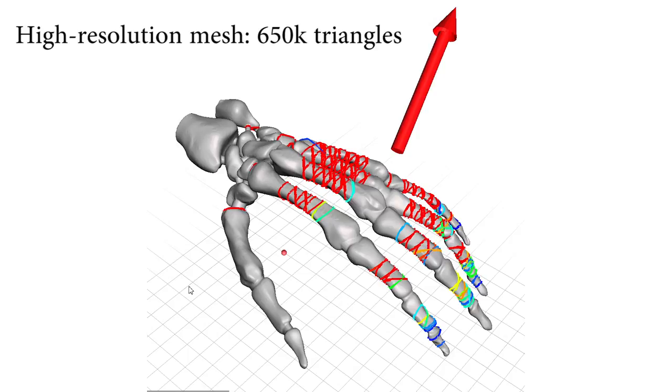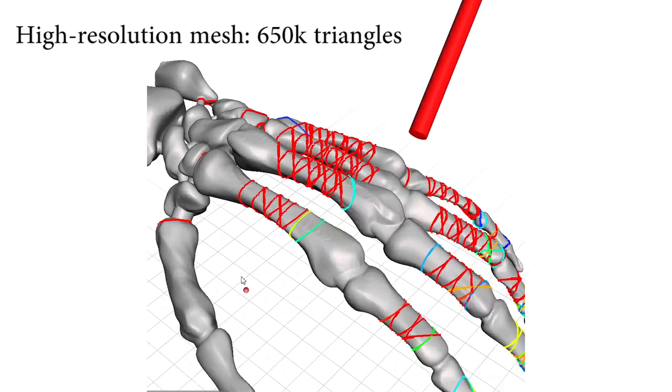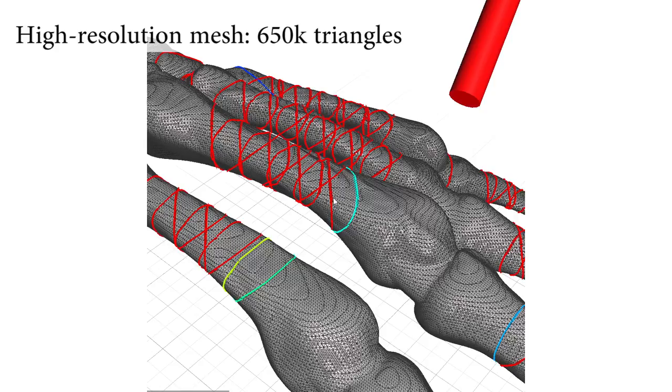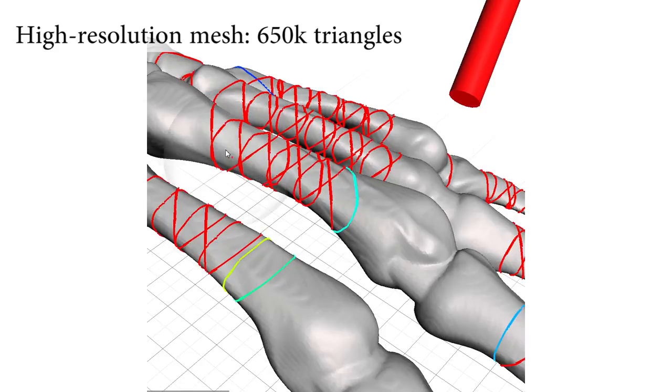This hand mesh has approximately 650,000 triangles. Even at this extreme resolution, our technique is quite fast. After updates to the shape, the analysis and visualization are recomputed in a few seconds.